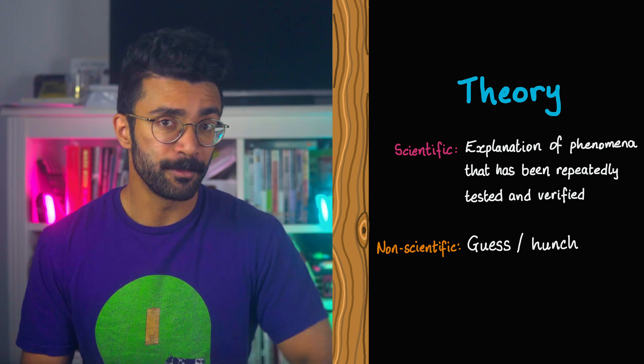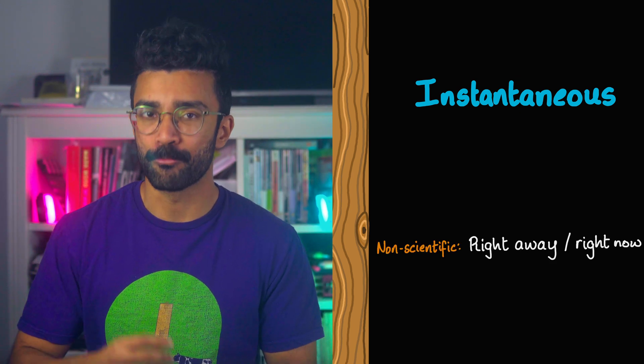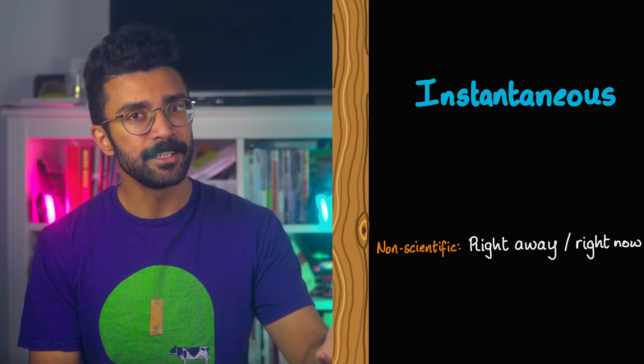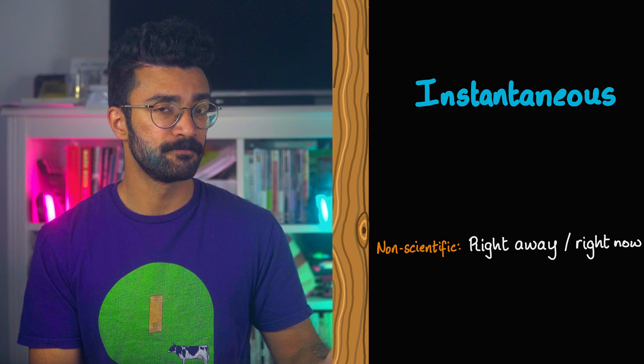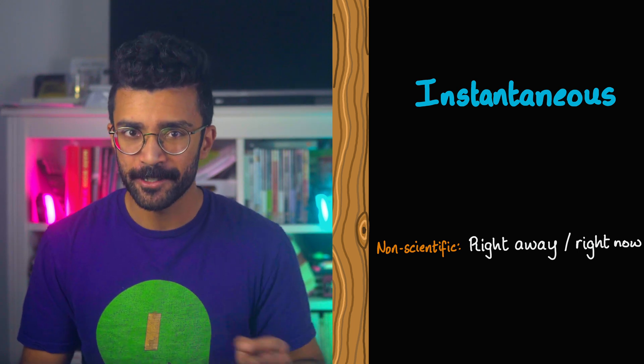Another example of scientific words meaning different things to different people is the word instantaneous. Over time, as language has changed, most people think of the word instantaneously to mean the same thing as instantly or right away. There was an instantaneous change in his facial expression. That was a bit dramatic, I don't know why it's the best example I could think of. But physicists use the word instantaneous to mean something very slightly different.